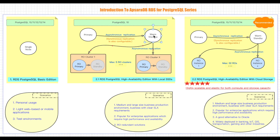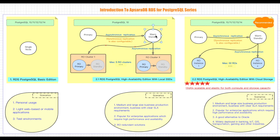In general, the High Availability Edition with local SSDs is suitable for PostgreSQL 10 users with strict SLA demands, especially for medium and large-size companies. More importantly, if you are seeking a high-availability architecture that provides both high performance and redundant read-only nodes, you must try RDS for PostgreSQL High Availability Edition with local SSDs.